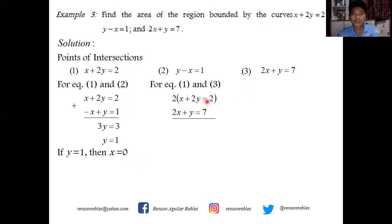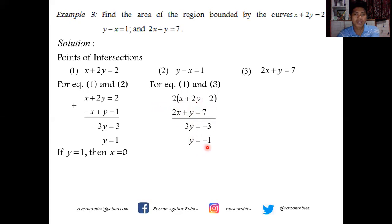For equations 1 and 3: x plus 2y equals 2, and 2x plus y equals 7. To eliminate x, multiply equation 1 by 2 to get 2x plus 4y equals 4, then subtract equation 3. This gives 3y equals negative 3, so y equals negative 1, and substituting back gives x equals 4. The intersection of equations 1 and 3 is (4, −1).